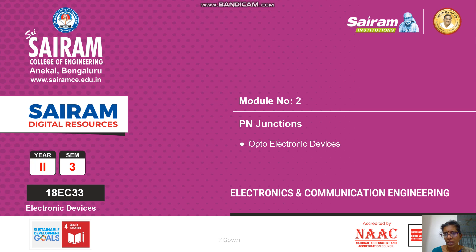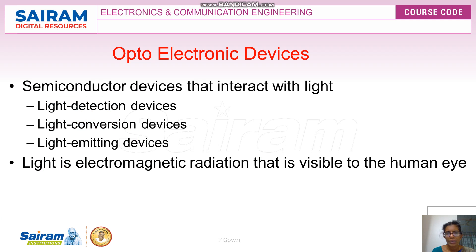In this video, we will be discussing what is meant by optoelectronic devices. An optoelectronic device is a device that interacts with light. A normal pn junction diode interacts with electrical energy, but optoelectronic devices interact with photon energy — that is, light energy.